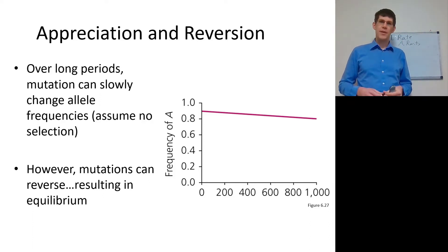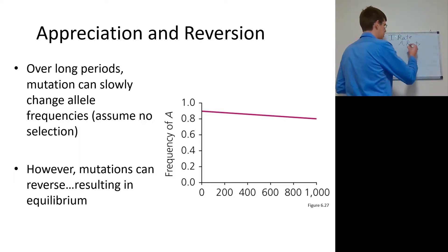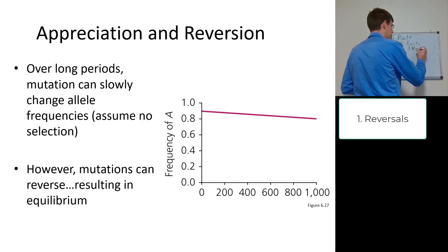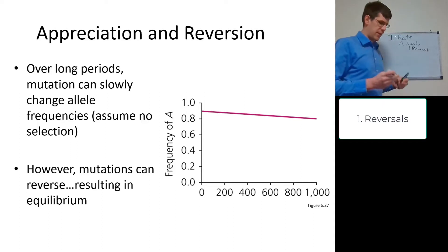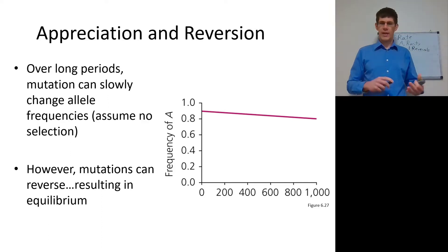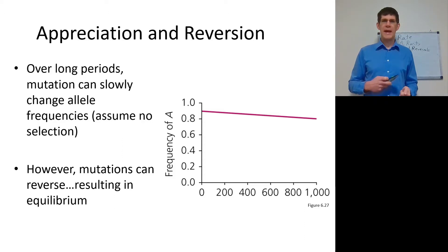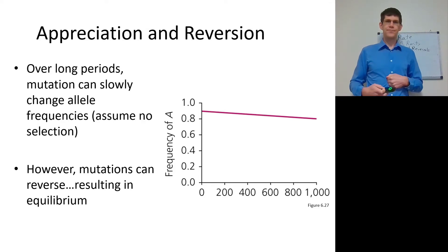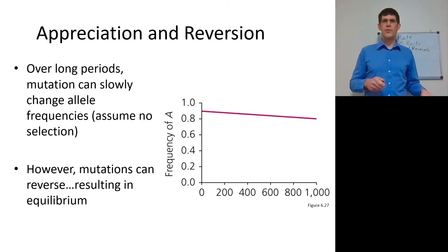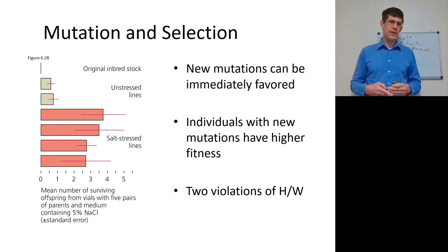The chance of a mutation happening are exactly equal to the chance of that same exact mutation occurring in reverse. So an A to G mutation can reverse back to a G to A mutation. A thymine dimer can be reversed. If you have a mutation that results in a different amino acid, another mutation can come along and switch it back — like changing a serine to a valine and then back to a serine. This results in a kind of equilibrium over time, unless there's selection.